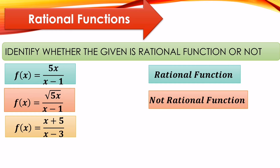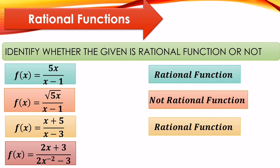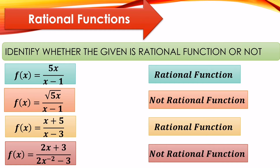Another one: f(x) = (x + 5) over (x − 3). This is a rational function. And lastly, f(x) = (2x + 3) over (2x^(−2) − 3). This is not a rational function because it has a negative exponent. As stated earlier, rational functions cannot have negative exponents or fractional exponents.